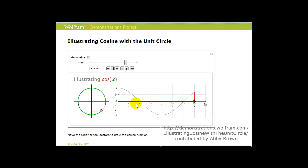And on the right, we're seeing points plotted where the x-coordinate would be the angle, and the y-coordinate would be the cosine of that angle.